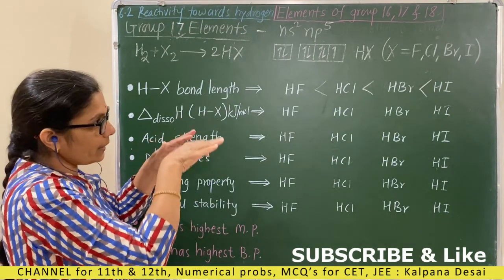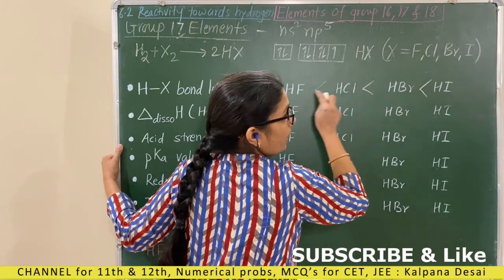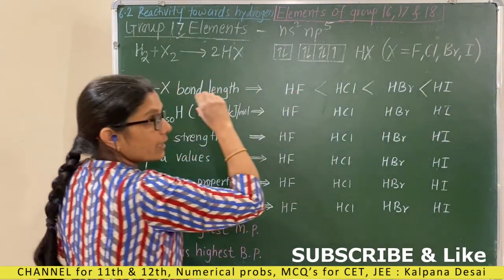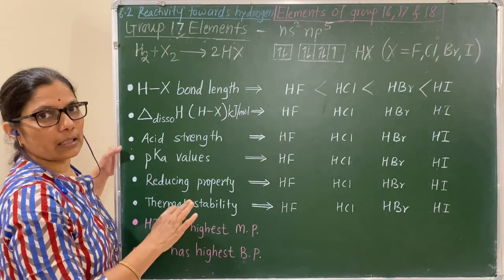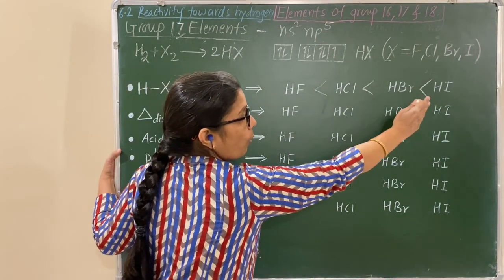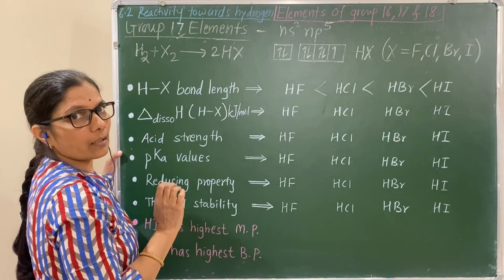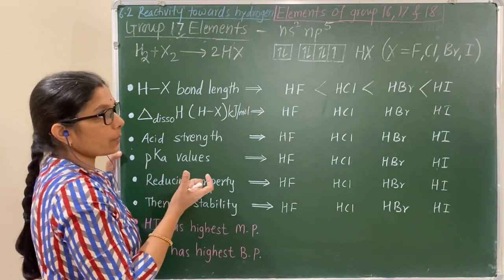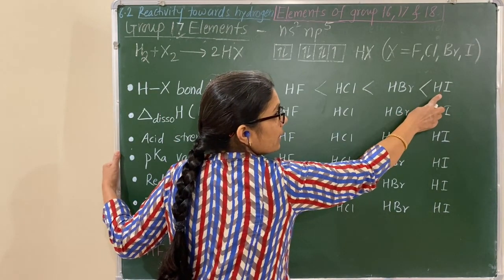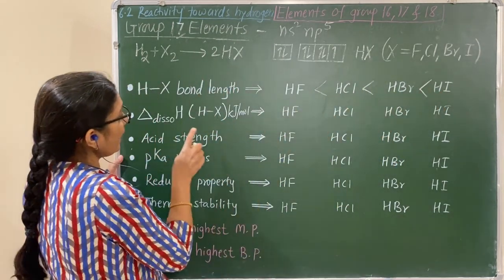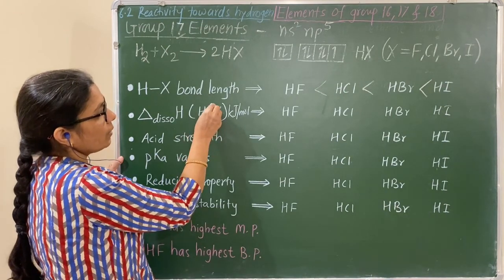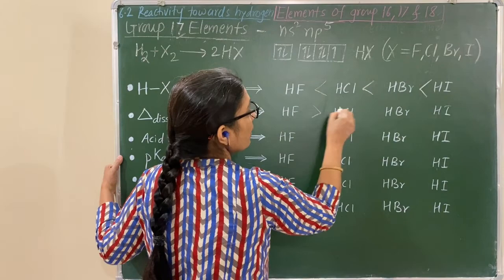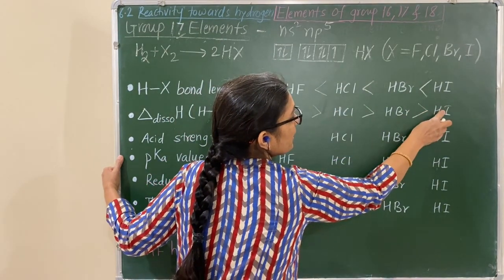As bond length increases, the bond is longer and therefore weaker — bond strength decreases. If bond strength decreases, the energy required to break that bond is less. This means bond dissociation enthalpy goes on decreasing, so the bond breaks more easily down the group.